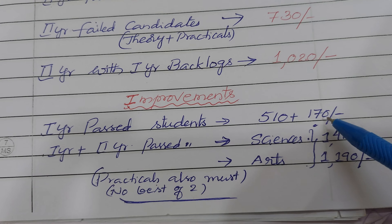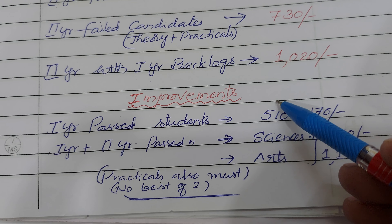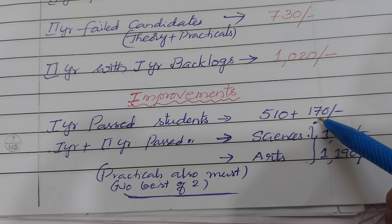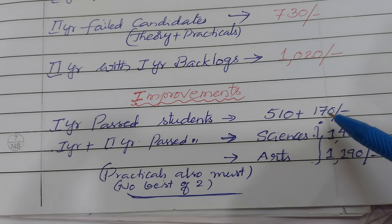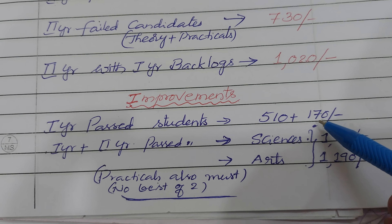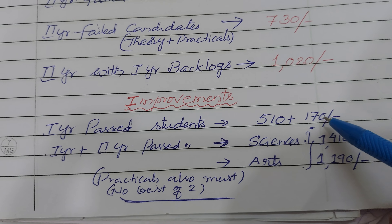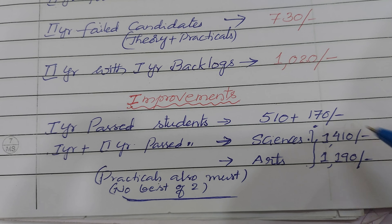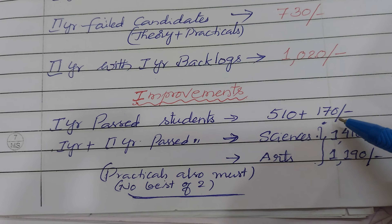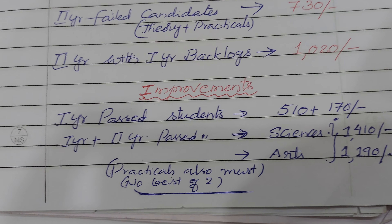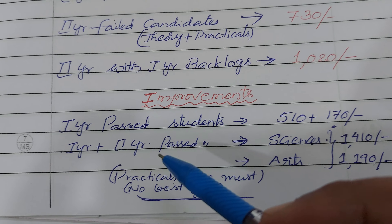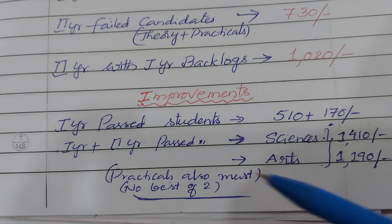For first year past students, the fee is a base fee of 510 rupees plus 170 rupees per subject. The 510 base fee is mandatory. If you are appearing for improvement in one subject, it is 170 rupees; two subjects means 170 × 2 = 340; three subjects means 170 × 3 = 510, so the total becomes 510 + 510 = 1020 rupees.